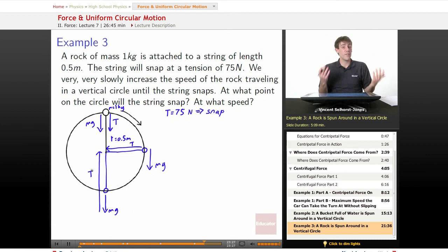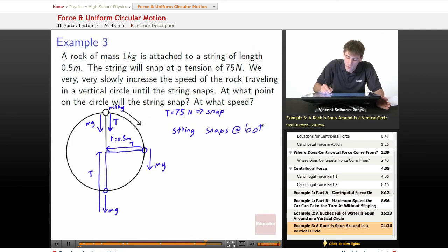When we're on the side, gravity doesn't have any effect. It means we need just the same amount of tension that we need as our centripetal force. When we're at the very bottom, gravity is going to work the most against us and so the tension is going to be the maximum. So string snaps at bottom. String snaps at bottom of circle because that's when gravity and tension are going to be butting heads.